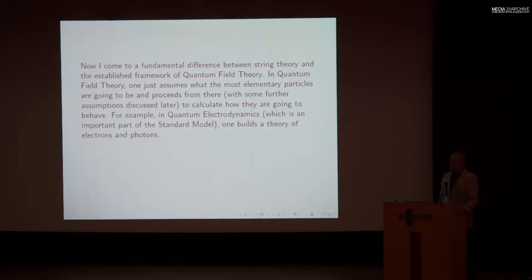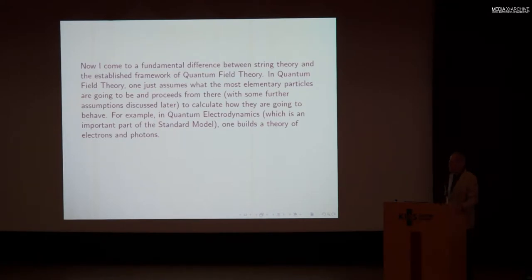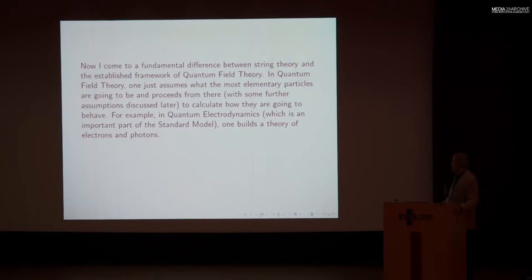For example, you might want to describe atoms, which basically are made out of electric fields and charged particles. The right theory would be quantum electrodynamics, which is an important part of the standard model that David Gross talked about. If you want to develop the theory of quantum electrodynamics, you build a theory of electrons and photons.